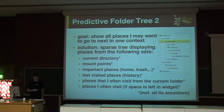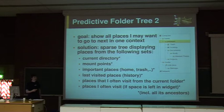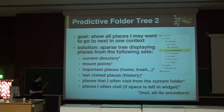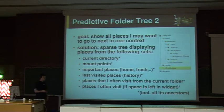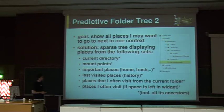I did that with a sparse tree which displays places from these sets. I have the current directory, which is always shown with its parent directories. Then mount points, which are important. Then other important places like home, trash, desktop, which you always want to see. Then the tree is enriched with last visited places, so the history. And with places that I often visit from the current folder — when I visit a folder, it remembers from which folder I visited it, so the next time I visit the folder, I know exactly which folder I visited next from the current folder.